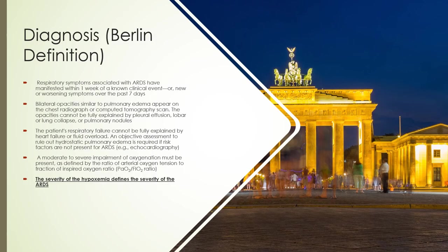For the Berlin definition of ARDS: symptoms must have had an acute onset — defined as a week or less. They should have opacities on their x-ray that can't be explained by pleural effusions, just straight atelectasis, or nodules. We look for opacities without an obvious cause. We also need to make sure there's no obvious cause like a pleural effusion or a nodule causing collapse.